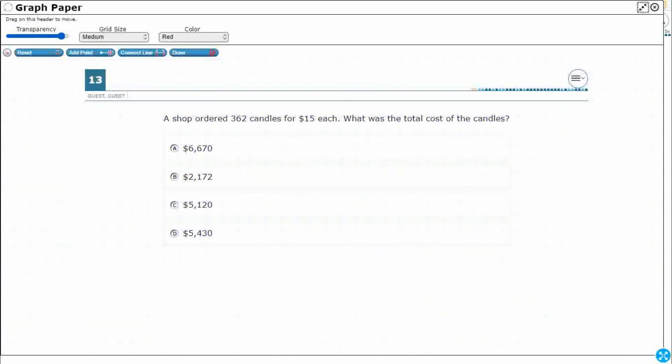So I've got 362 candles. If I wanted to draw a part-part whole or strip diagram, it would be kind of crazy, right? Because I'm looking for my total. Your total always goes to the top. That's my unknown.